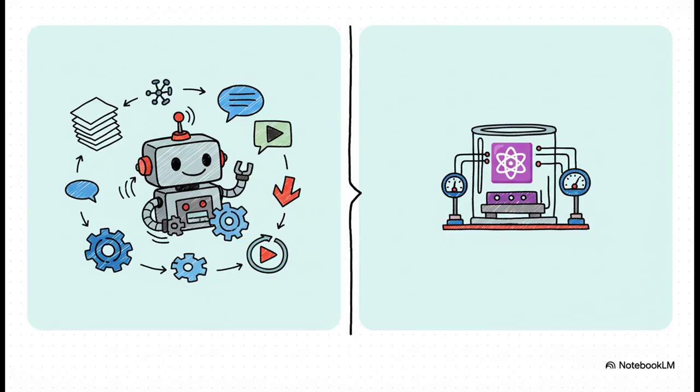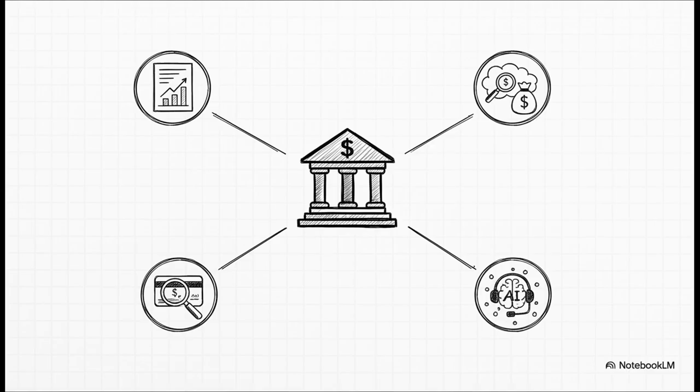So why all the hype? Because it works in a fundamentally different way. You know how regular computers use bits that are either a zero or a one? Well, quantum bits or qubits can be both at the same time, thanks to this crazy thing called superposition. This lets them check out a massive number of possibilities all at once. That makes them unbelievably powerful for certain types of super complex problems. But, and this is key, they're not something you can just use for any old task.